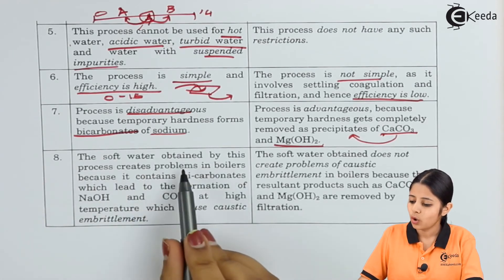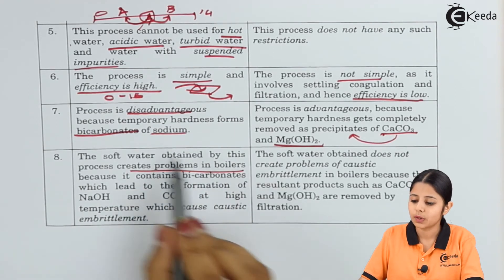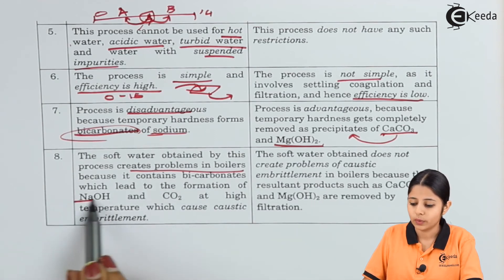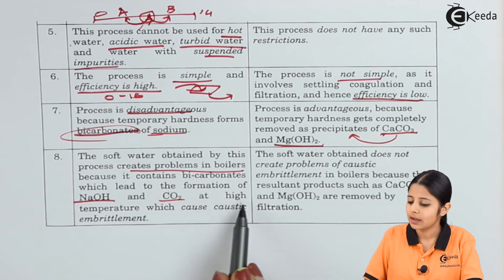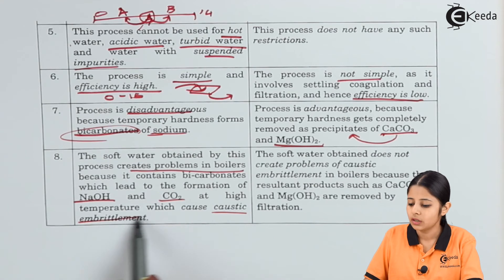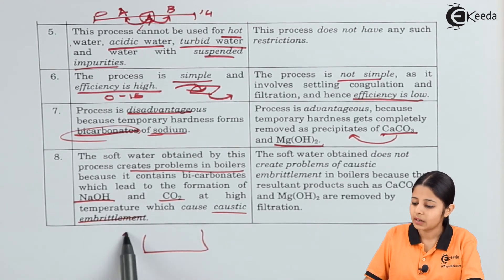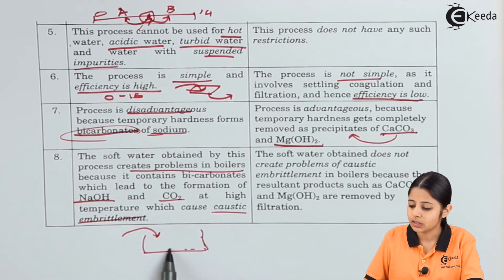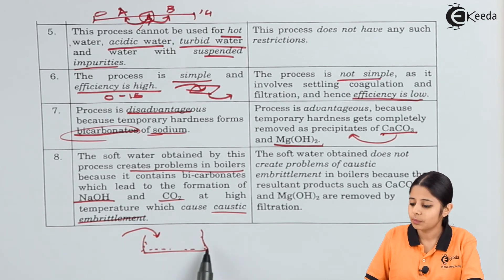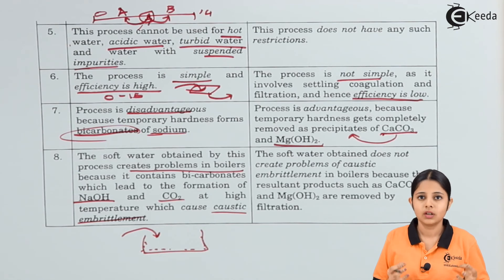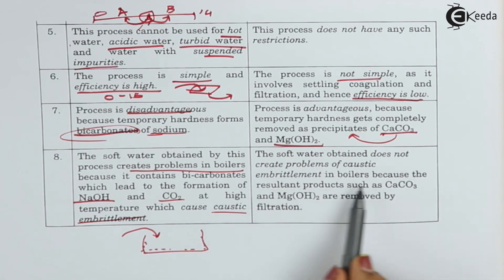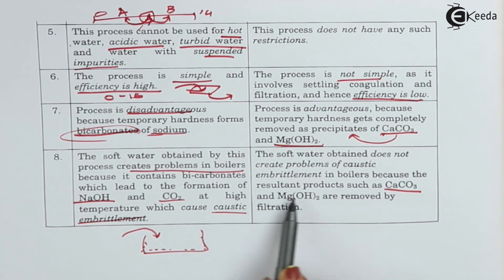Point eight: soft water obtained by the zeolite process creates problems in boilers because it contains bicarbonates of sodium. At high temperatures these bicarbonates lead to the formation of NaOH and CO₂, which causes caustic embrittlement — particles stick to boiler walls creating temperature imbalance and structural damage. In the lime soda process, soft water does not cause caustic embrittlement because the resultant precipitates CaCO₃ and Mg(OH)₂ are removed by filtration beforehand.